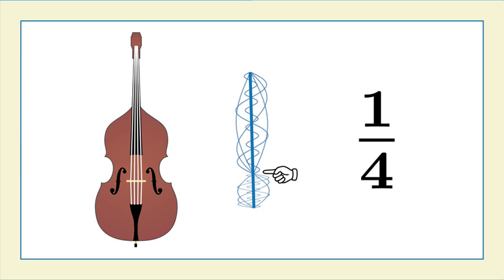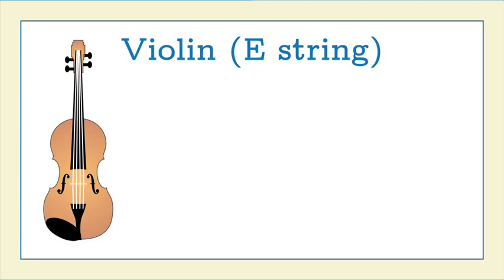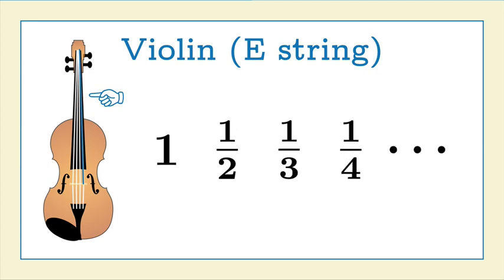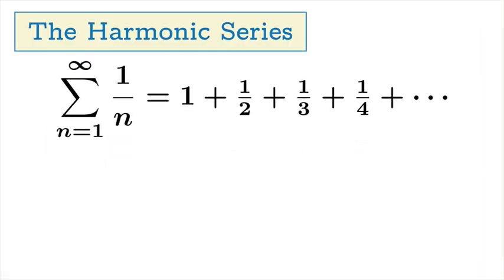So the reciprocals correspond to so-called harmonics. They're not the only harmonics on the string, but they are harmonics, and so that's really why this is called the harmonic series. So you can do this with any stringed instrument. So you could take the E string on a violin and hear the reciprocals.